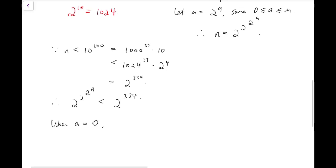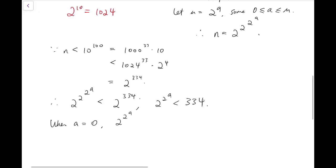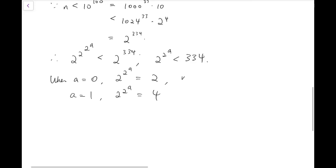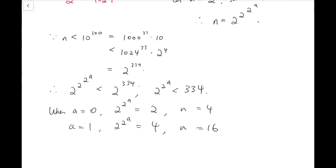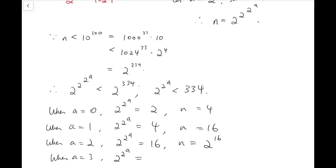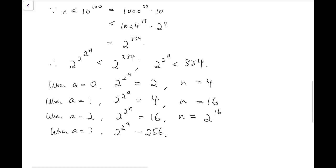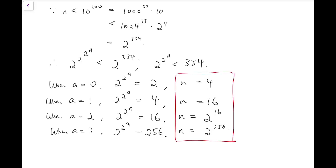We try values one by one. When a equals 0, the tower gives 2 to the 1 equals 2, so n equals 2. When a equals 1, the tower gives 2 to the 2 equals 4, so n equals 2 to the 4 equals 16. When a equals 2, the tower gives 2 to the 4 equals 16, so n equals 2 to the 16. When a equals 3, the tower gives 2 to the 8 equals 256, so n equals 2 to the 256 — we're very close to the limit. These four values of n satisfy all the requirements, and they are our final answers.